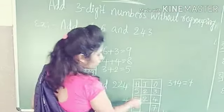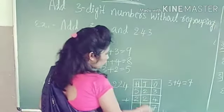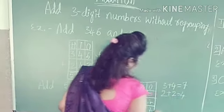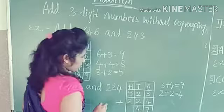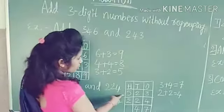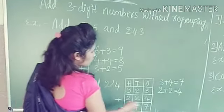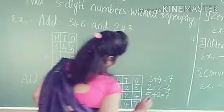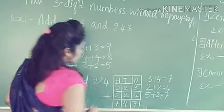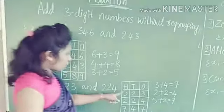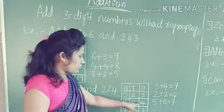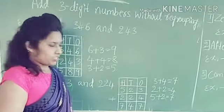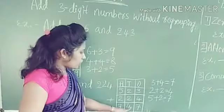Let's add the numbers at the ones place. 2 plus 2 — how much? 2 plus 2 is equal to 4. So I write 4 at the ones place. Then add the numbers at the hundreds place. 5 plus 2 is equal to 7. So I write 7 at the hundreds place. The number 523 plus 224 is equal to 747. The answer is 747.